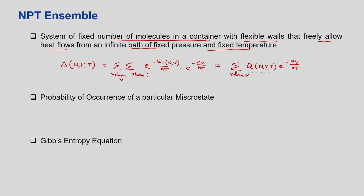If we know delta, we can write the probability of occurrence of a particular microstate. The probability of locating a particular microstate with energy E_i and pressure P is given by: e to the power of minus E_i(N,V) over KT, multiplied by e to the power of minus PV over KT, divided by delta. So to find the probability of a particular microstate i, you multiply both the E_i and PV exponential terms and divide by the partition function.